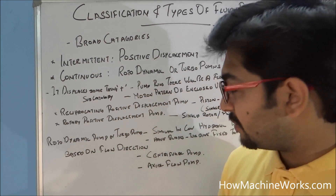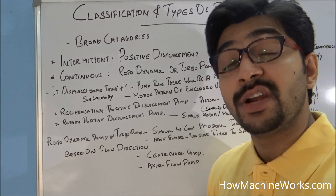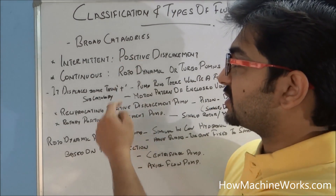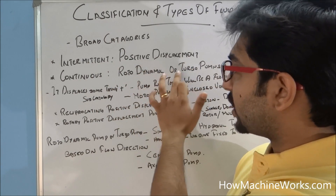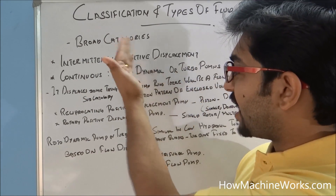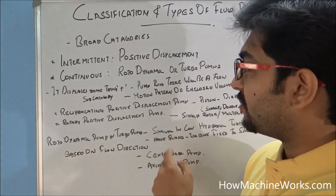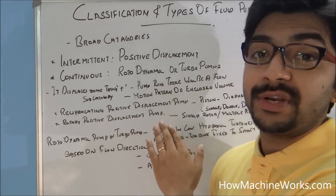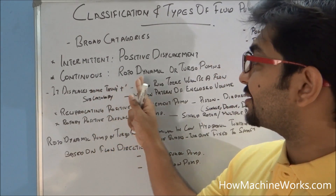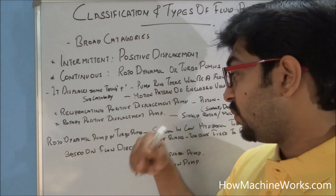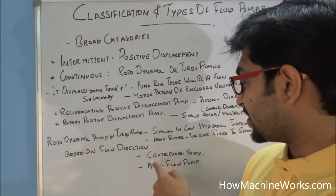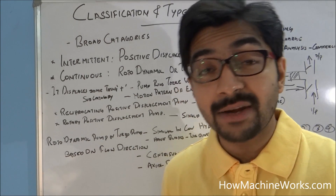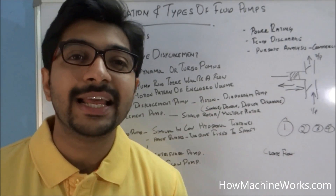Axial flow pumps and centrifugal pumps are not positive displacement pumps — meaning when these pumps work, a discharge is not guaranteed. In summary, the broad classifications are positive displacement pump and rotor dynamic pump. Positive displacement pumps have subcategories of reciprocating and rotary types, while continuous rotor dynamic or turbo pumps have subcategories of centrifugal and axial flow pumps.